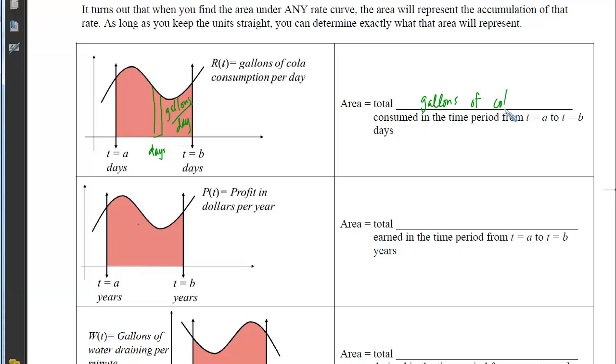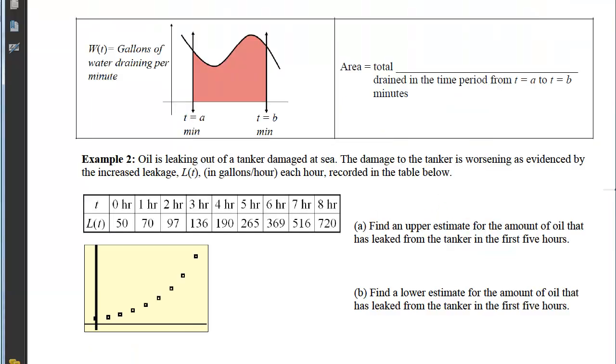Similarly here, if this rate represents the profit measured in dollars per year, then again we can compute the area of a sample rectangle. Its width will be measured in years, its height will be measured in dollars per year. So if I multiply those together, the years will cancel, and I'll end up with the total dollars that are earned in the time period from t equals 0 to t equals b.